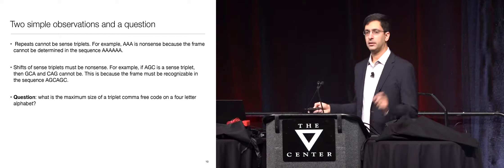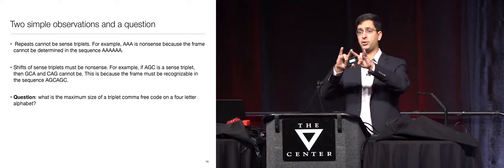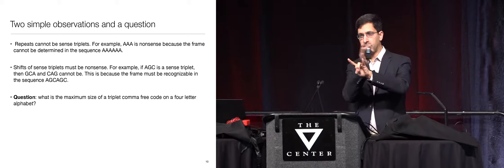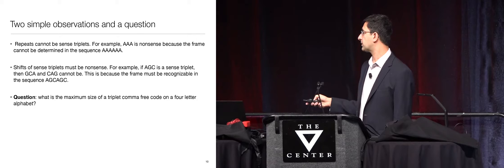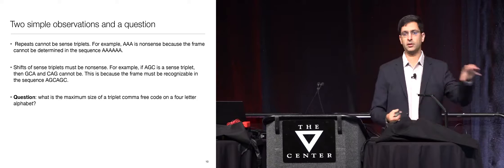For example, AAA cannot be an element of such a code, because if you put two of these together and have six A's in a row, you don't know where the code starts. Similarly, if AGC was in your code, then putting two of them next to each other, you'd have to be able to understand that AGC is in your code and not GCA or CAG. So as you start putting in code words, others are ruled out.